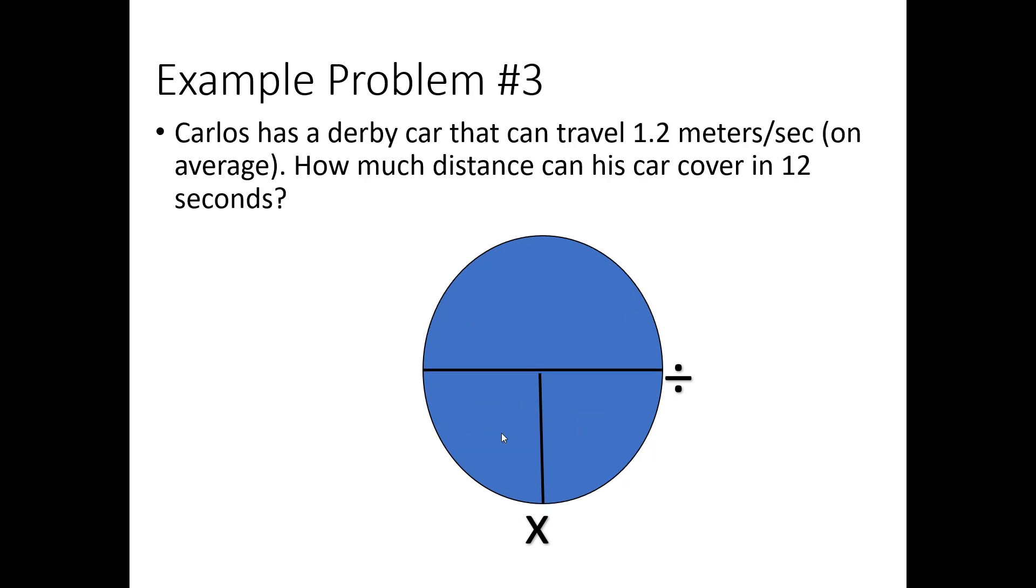All right, I want you to pause the video, and I want you to work out this problem and see if you get the right answer. So Carlos has a derby car that can travel 1.2 meters per second. So that's the speed, meters per second. So I'm going to plug that in for speed. I want to know how much distance his car can cover in 12 seconds. So I've plugged in my time, I've plugged in my speed, and I'm looking for distance. Now, this time, I'm going to have to cross this vertical line. So that means multiply. So I'll have to multiply these two numbers to get my answer. Watch what happens here. Seconds is going to cancel, and I'm going to be left with meters, which makes sense for a distance solution. All right, so my total distance is going to be 14.4 meters.